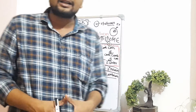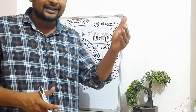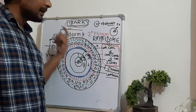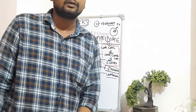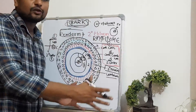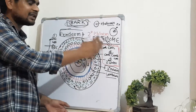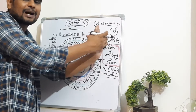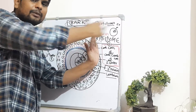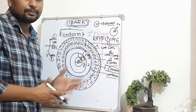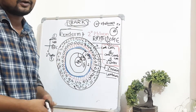The outer bark is called rhytidome, which generally consists of dead patches of old bark. Technically, bark refers to the periderm plus secondary phloem — that is, all tissues present outside the vascular cambium. Whatever the age of the plant, the collective term for secondary phloem and periderm is bark.